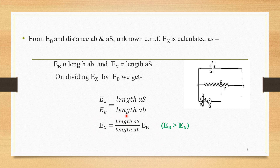This is a simple equation. By using this equation, we can easily find out the potential of the given experimental cell — the unknown EMF of the given experimental cell. The condition must be followed: EB must be greater than EX. This is the Poggendorff compensation method, by which we can easily find out the unknown EMF of a particular cell.